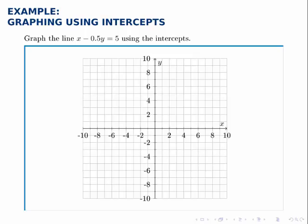Graph the line x minus 0.5y equals 5 using the intercepts. Again, there are multiple ways to graph a line, but all of them relate back to the fact that two points determine a line. So we're always trying to graph two points and then connect them with the line.